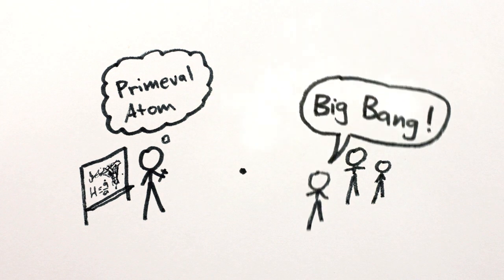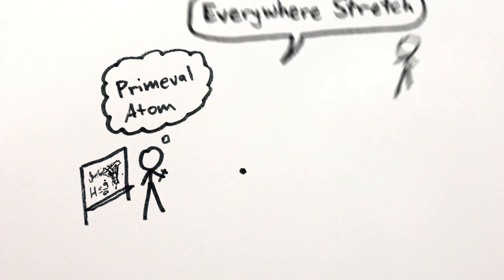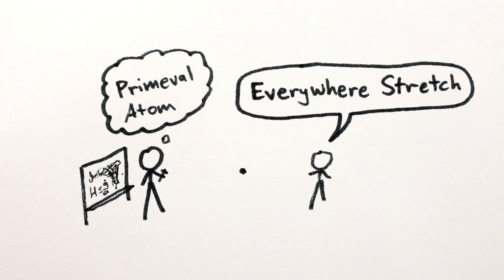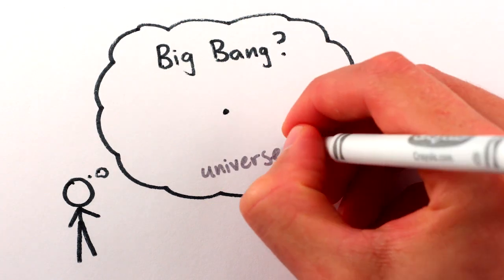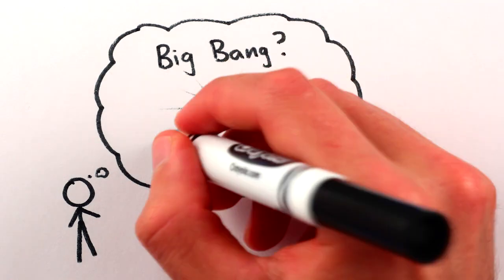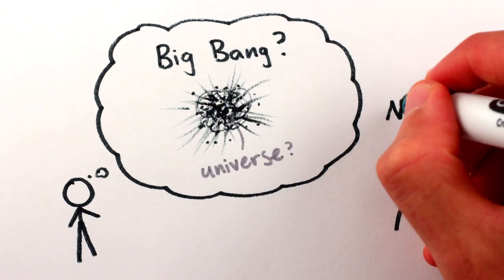Except Big Bang is a horrible name. It would be much more accurate to call it the Everywhere Stretch, because one of the most common misconceptions about the Big Bang is that it implies that the entire universe was compressed into a single point, from which it then somehow expanded into the surrounding nothingness.